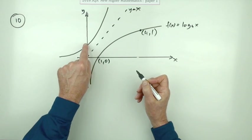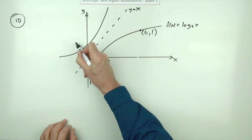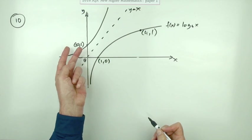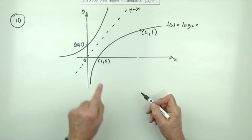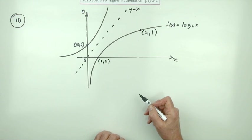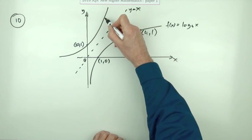That point would reflect straight up to here, so that now becomes (0,1). Notice they're just interchanging, because that's what the inverse does. It takes the answer and puts it in as the input. And the point (4,1) will become (1,4).